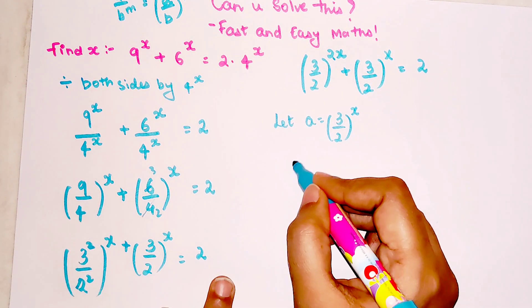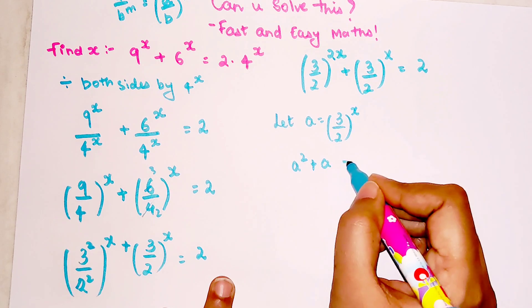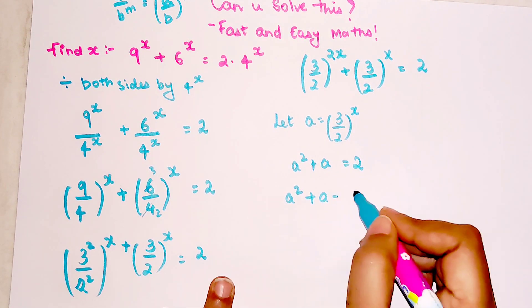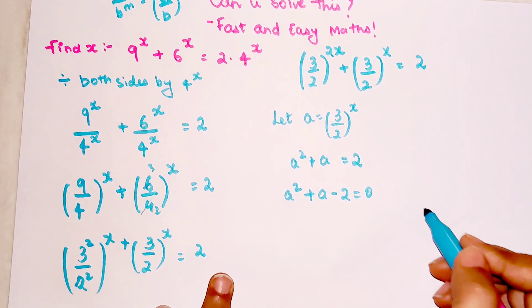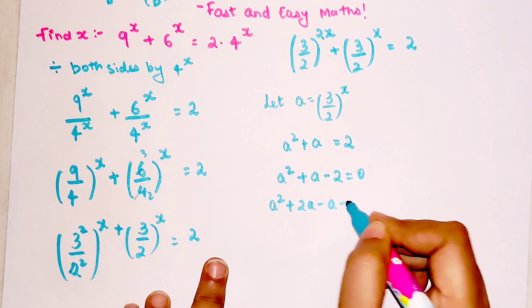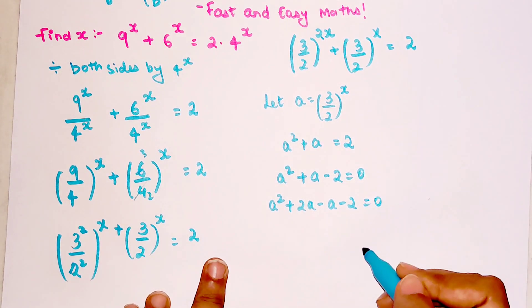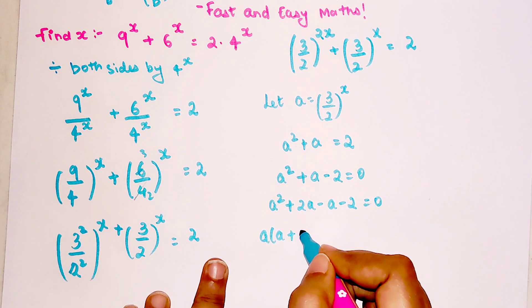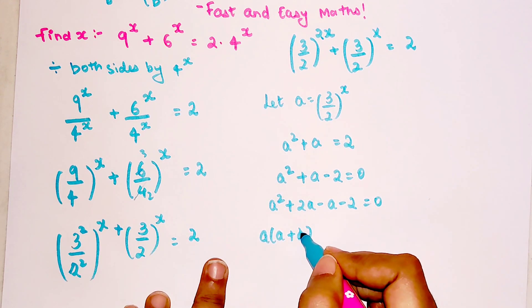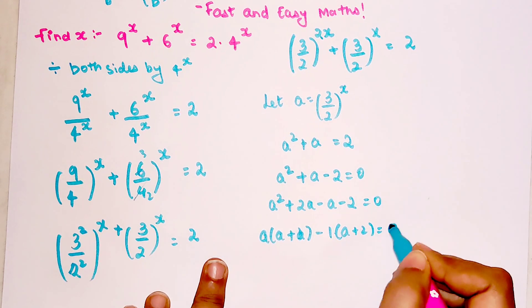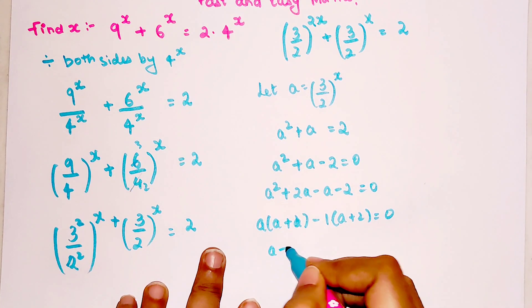Let's shift the 2 on this side: a^2 + a - 2 = 0. We get a^2 + 2a - a - 2 = 0. I'm factorizing the quadratic. Taking common, I'll get a + 2, and I'll take -1 common, so I'll get (a + 2) common over here as well. So I have (a + 2)(a - 1) = 0.